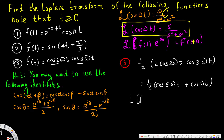So the Laplace transform of f(t) = cos(2ωt)·cos(3ωt) becomes the Laplace transform of (1/2)[cos(5ωt) + cos(ωt)]. Applying the cosine Laplace formula, with 5ω as our omega for the first term, we get: (1/2) · [s/(s² + (5ω)²) + s/(s² + ω²)].